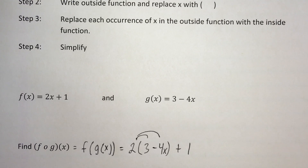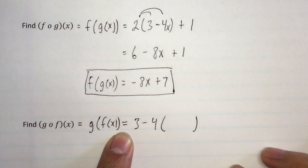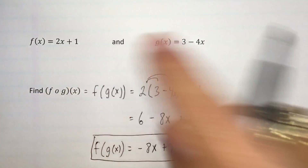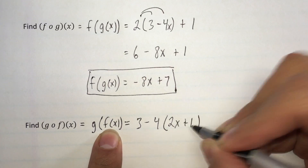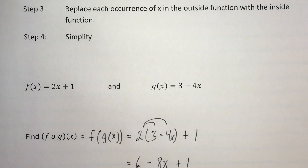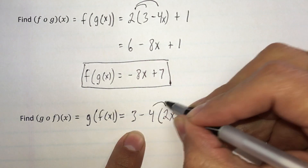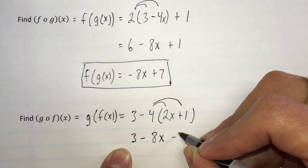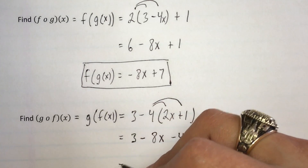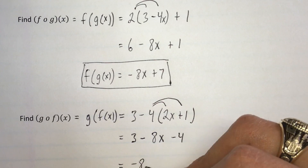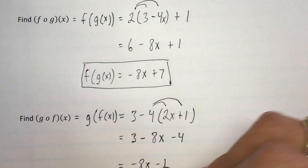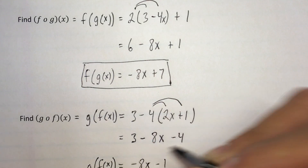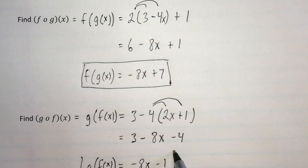Step 3 is to replace each occurrence of x in the outside function with the inside function. In the parentheses I'm going to put the inside function — in this case it's f of x, which is 2x plus 1. Step 4 is to simplify. We're going to distribute, writing 3 minus 8x minus 4, then combine like terms: negative 8x and 3 minus 4 is negative 1. So g of f of x is equal to negative 8x minus 1.